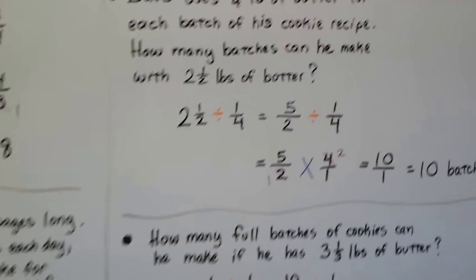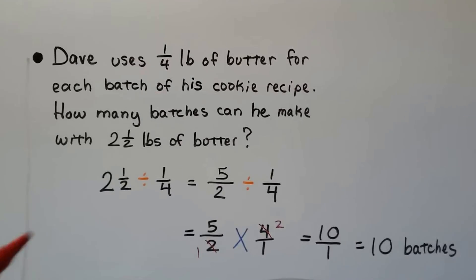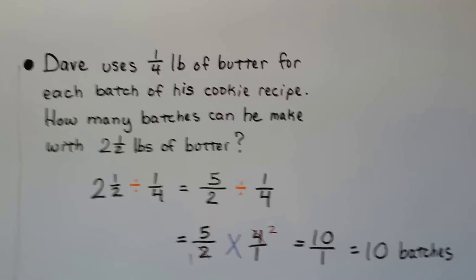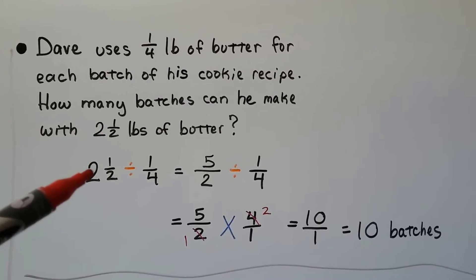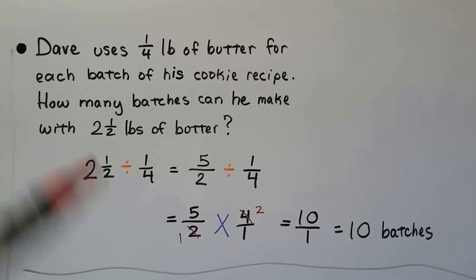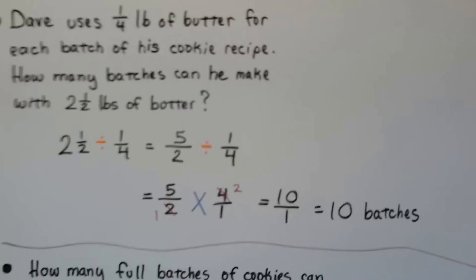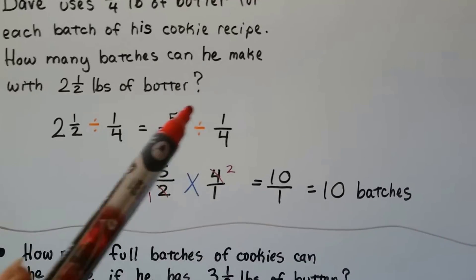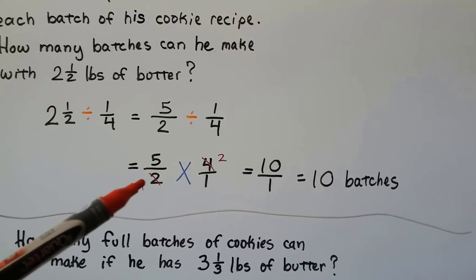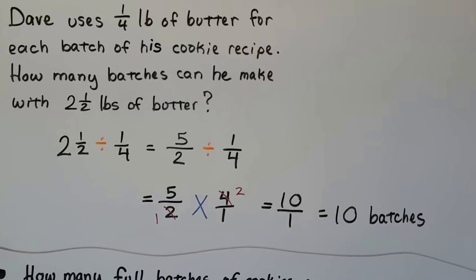Dave uses 1/4 pound of butter for each batch of his cookie recipe. How many batches can he make with 2 and a half pounds of butter? We take the 2½ pounds and divide it by 1/4. Convert 2½ to an improper fraction: 2 times 2 is 4, plus 1 is 5 — so 5/2. Divide by 1/4, flip to 4 over 1 and change to multiplication. Cross canceling: the 2 and the 4 reduce to 1 and 2. Then 5 times 2 is 10 over 1 times 1 is 1 — he can make 10 batches of cookies.